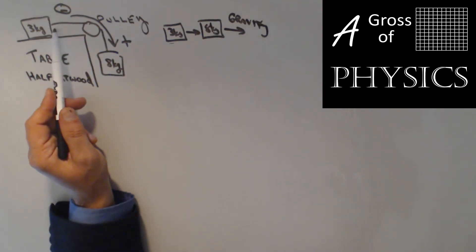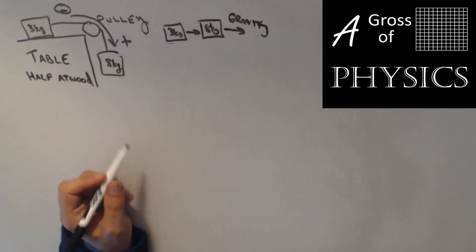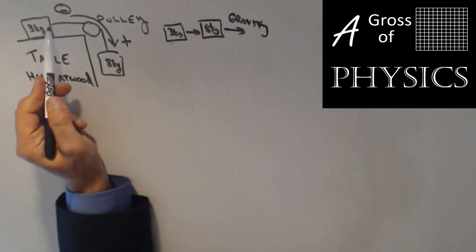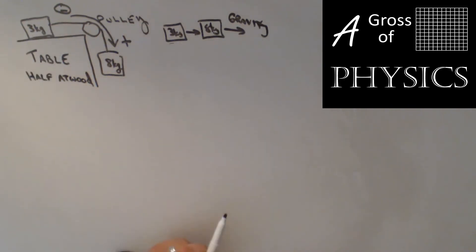There's one force that's common between the two objects, and that's the tension in the rope. These two masses are going to be tied together. Because of Newton's third law, the tension in this part of the rope is going to be equal and opposite to the tension in that part. Here's how you solve these problems: first, you need to draw a free body diagram.